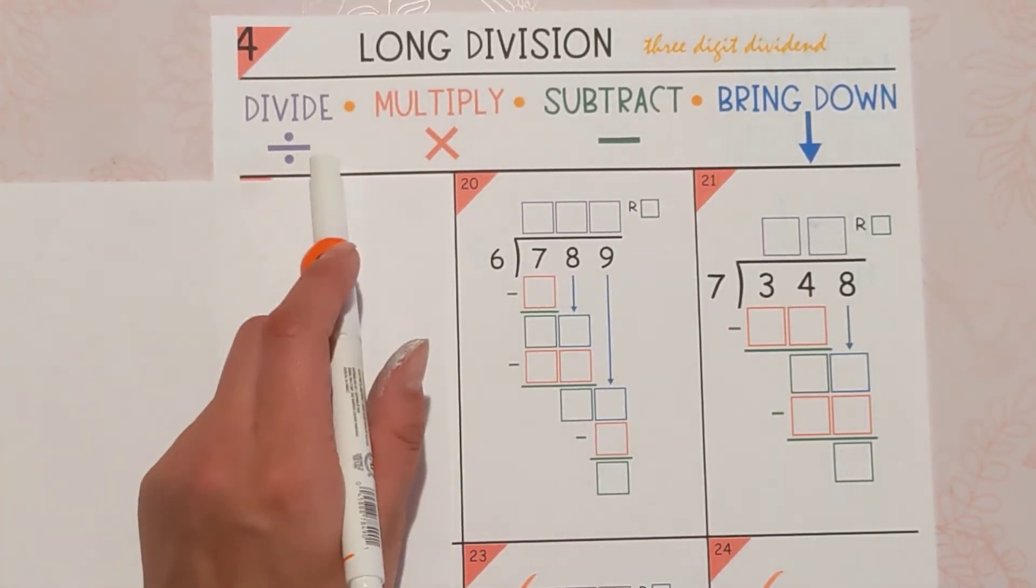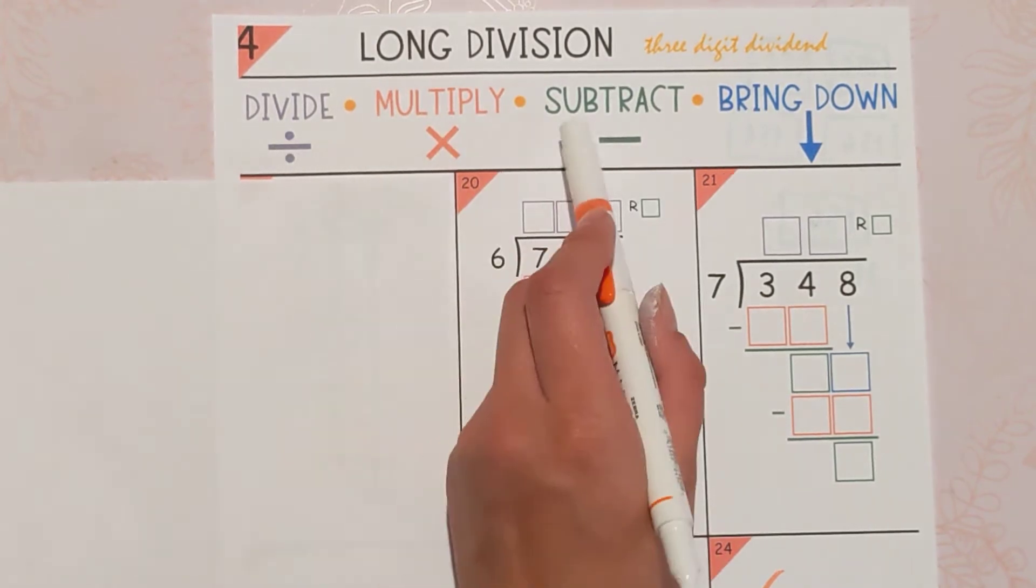So we do divide, multiply, subtract, bring down. Does McDonald's sell burgers?